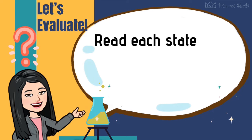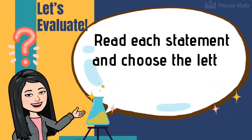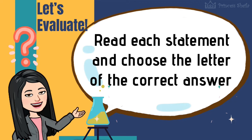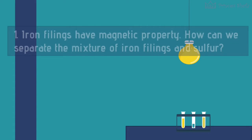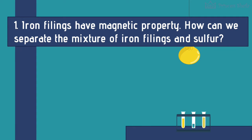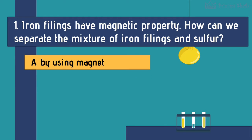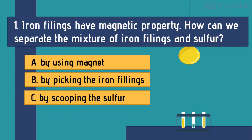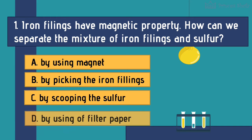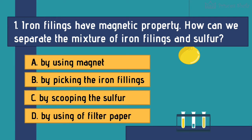Let me see if you understood the lesson. Read each statement and choose the letter of the correct answer. Number 1: Iron filings have magnetic property. How can we separate the mixture of iron filings and sulfur? A. By using a magnet. B. By picking the iron filings. C. By scooping the sulfur. D. By using a filter paper.